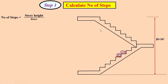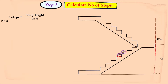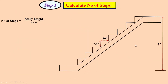Now dear students, since we have an intermediate landing stair, we design one portion and replicate it in the other portion. So if we take the total height and divide it, we get 5 steps for one flight.